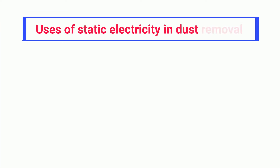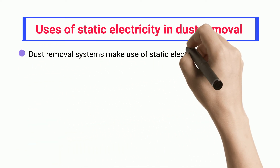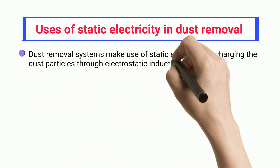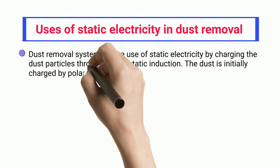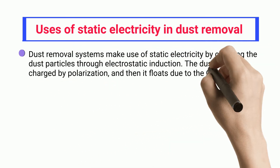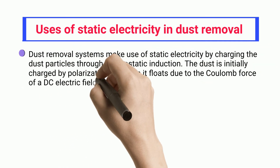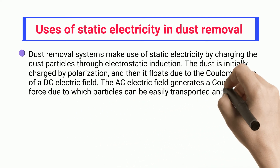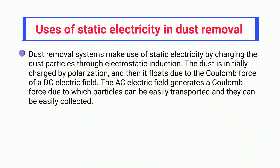Dust removal systems make use of static electricity by charging dust particles through electrostatic induction. The dust is initially charged by polarization and then floats due to the Coulomb force of a DC electric field. The AC electric field generates a Coulomb force due to which particles can be easily transported and collected.